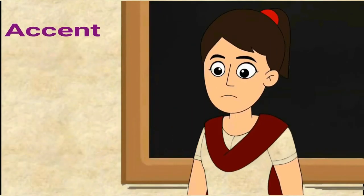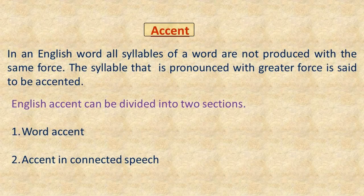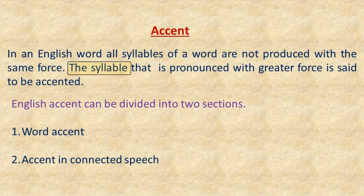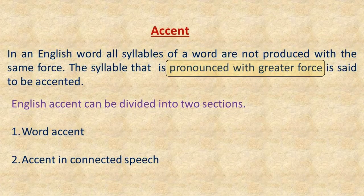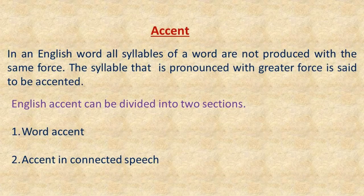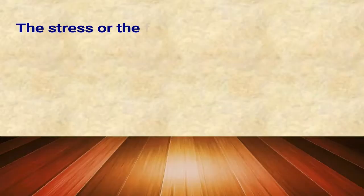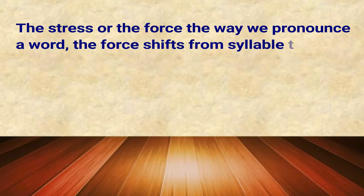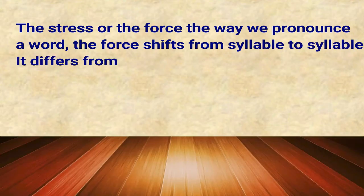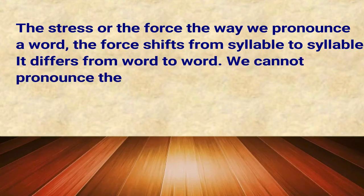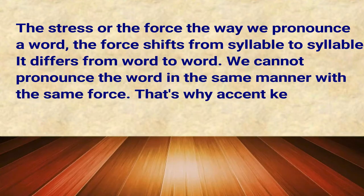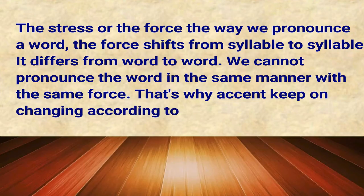Let's talk about accent. In an English word, all syllables are not produced with the same force. The syllable that is pronounced with greater force is said to be accented. The stress, or the force with which we pronounce a word, shifts from syllable to syllable and differs from word to word. We cannot pronounce every word with the same force — that's why accents keep on changing according to the syllable.